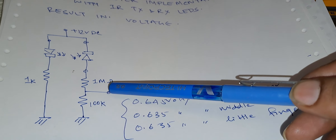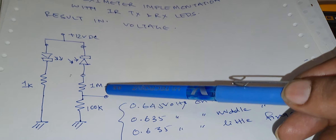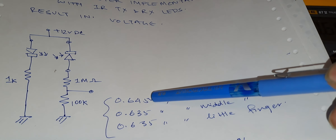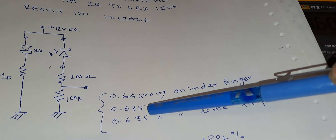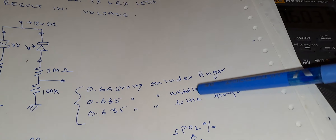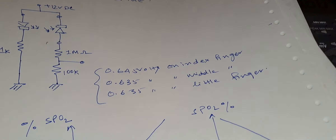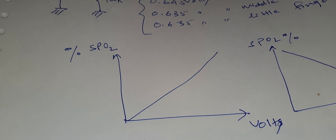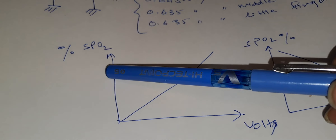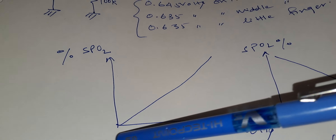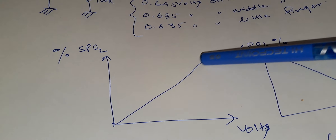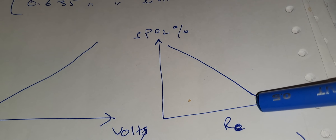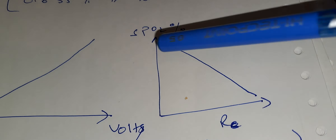So as you can see, basically whatever the infrared transmitter LED is transmitting, the amount of infrared light absorbed in the bloodstream is getting absorbed. The resultant infrared light is received on the receiver LED, which is proportional to the oxygen content in the blood. So this is how a pulse oximeter works.